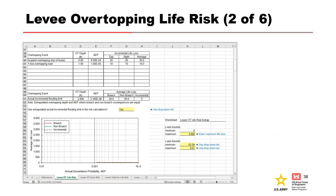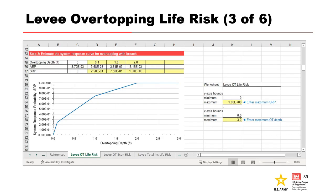After populating the breach overtopping table, the user populates the non-breach overtopping table in the same manner. The overtopping depth and corresponding AEP from the breach table are automatically populated in the non-breach table. The incipient overtopping non-breach life loss is set to zero. If data is not available, cells should be left blank. Once all data is entered for step one, the incremental overtopping table is calculated from the breach and non-breach tables. The user then determines if it is reasonable to extrapolate overtopping depth and AEP to where breach and non-breach consequences are equal, via a drop-down list in cell C54.